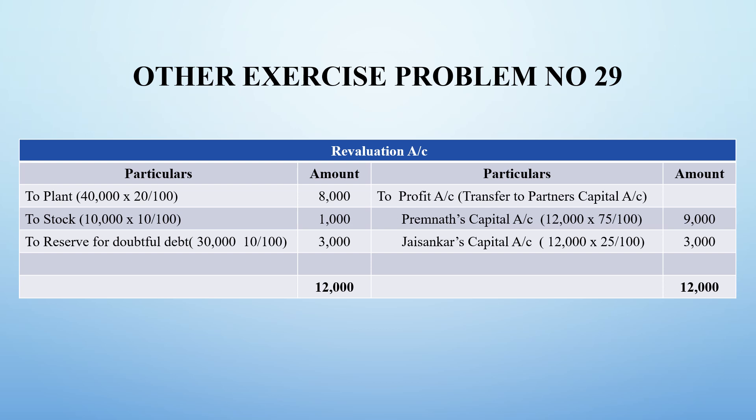Reserve for doubtful debts: 10% on Rs. 30,000 is Rs. 3,000, which needs to be reserved. Bad debts face a loss. So we put these on the debit side of the revaluation account. Regarding why reserve for doubtful debt goes to the debit side - the reserve means an amount is set aside within the business.